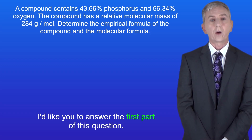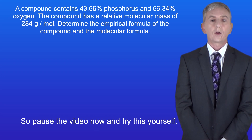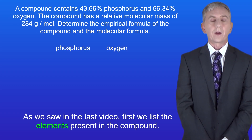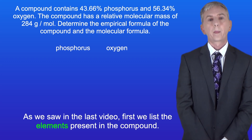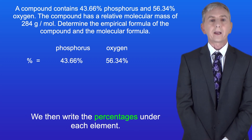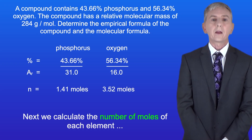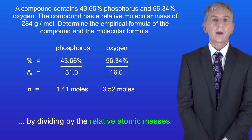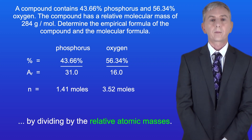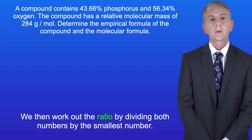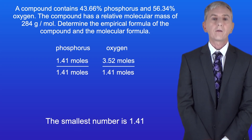I'd like you to answer the first part of this question, so pause the video now and try this yourself. As we saw in the last video, first we list the elements present in the compound. We then write the percentages under each element. Next we calculate the number of moles of each element by dividing by the relative atomic masses. We then work out the ratio by dividing both numbers by the smallest number. The smallest number is 1.41.